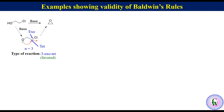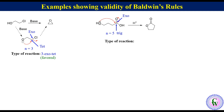The next example is cyclization of gamma-hydroxybutyric acid under acidic conditions to produce gamma-butyrolactone. In this reaction, there is attack by the alcoholic oxygen on the carbonyl carbon of the carboxylic acid. There is formation of a 5-membered ring, so N equals 5. The bond being broken is exo to the ring and the electrophilic carbon is sp2-hybridized (trigonal), so the type of reaction is 5-exotrig, which is a favored reaction as per Baldwin's Rule.